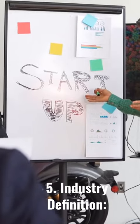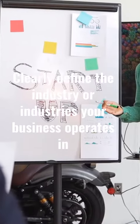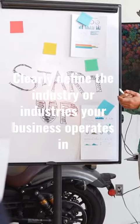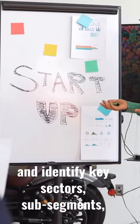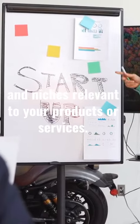Number 5: Industry Definition. Clearly define the industry or industries your business operates in and identify key sectors, sub-segments, and niches relevant to your products or services.